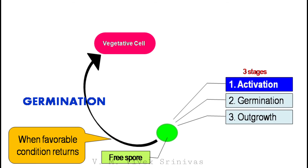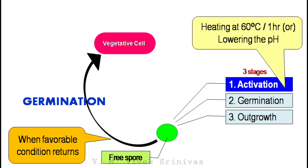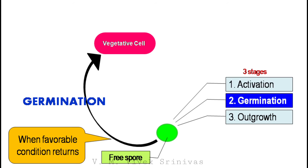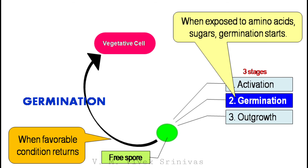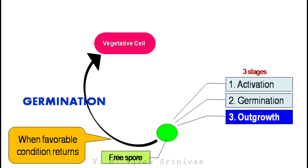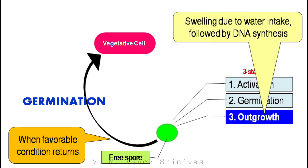First, the activation stage. Here the spore gets activated by heating at 60 degrees Celsius for an hour, or by lowering the pH. No morphological changes happen in this stage. Second, the germination stage. Once the activated spore is exposed to substances like amino acids and sugars, the germination starts — that is, the metabolism starts. Lastly, the outgrowth. Here, swelling takes place due to excessive water intake, which is followed by DNA synthesis.